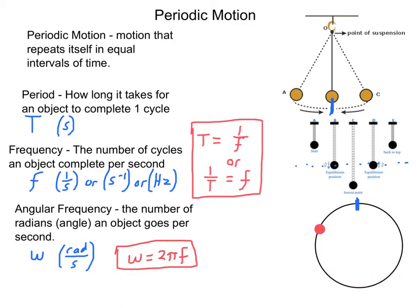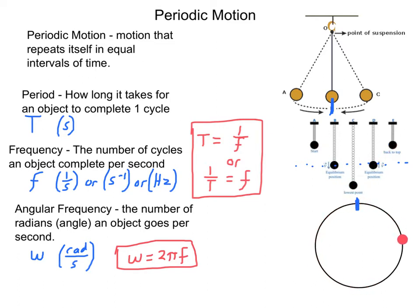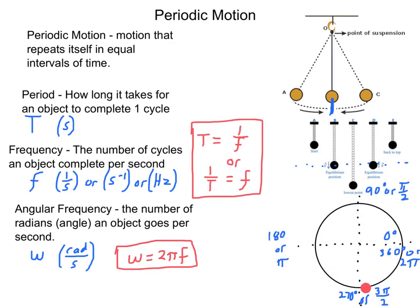Then it pulls back up through the equilibrium position — that's the position the object would be at if you just let it sit there. It comes all the way back up to the top and then oscillates back down to the bottom, and bounces back up. Down and up, down and up — an equal amount of time to go from the top all the way down and back up. This is periodic, and the time it takes is the same over and over again.